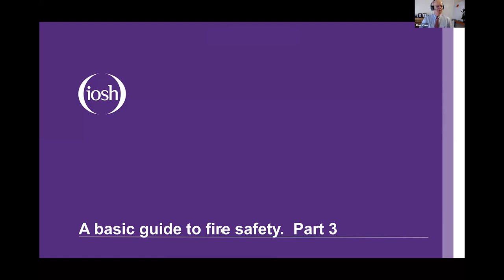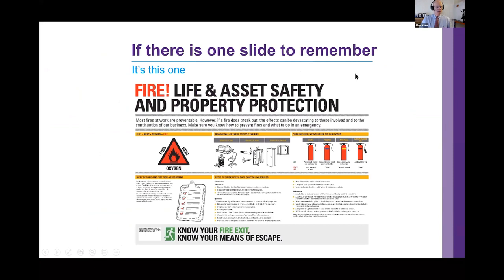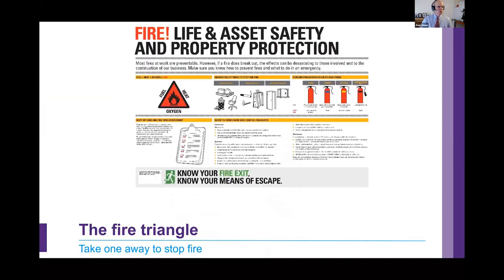Thank you very much, Neil. So, a basic guide to fire safety, part three. This slide depicts the fire safety wallboard and describes the fire triangle, how to stop a fire, types of fire extinguishers, duty of care and fire risk assessment, and safe control measures. The wallboard also reminds us about the basic types of fire extinguishers that are available, but remember that there are other fire extinguishers to be found — more of those later.